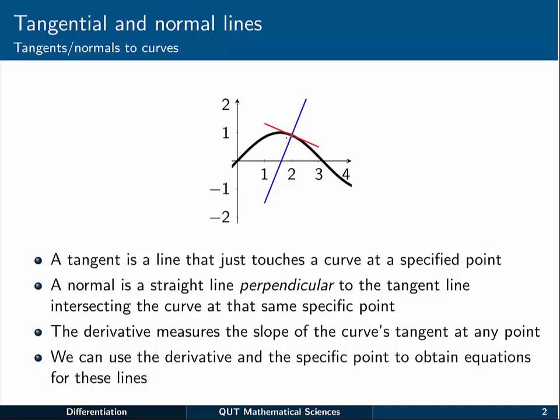Now remember that the derivative tells us the slope of the curve's tangent at any point. We can use this information and the location of that point to find an equation of the tangent line. We can use some other information about the relationship between the gradients of perpendicular lines to find the corresponding equation for the normal line.